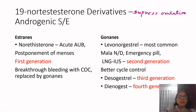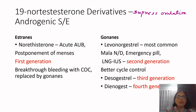The estranes and gonanes groups are taken together because both are 19-nor testosterone derivatives. Since they are derived from testosterone, they carry androgenic side effects. The older gonanes had more androgenic side effects, but the newer ones have progressively less androgenic activity.